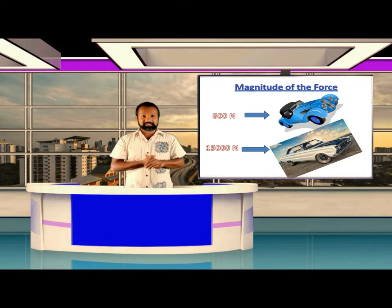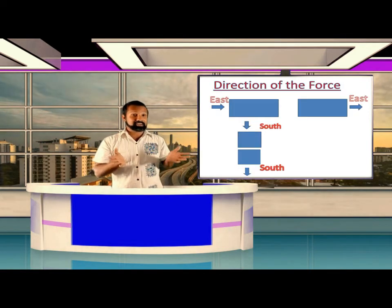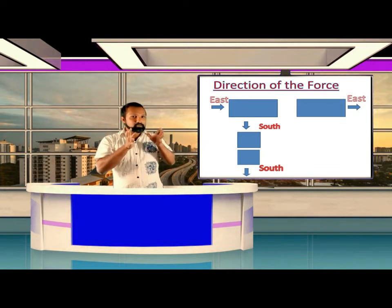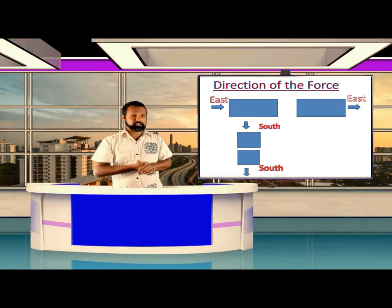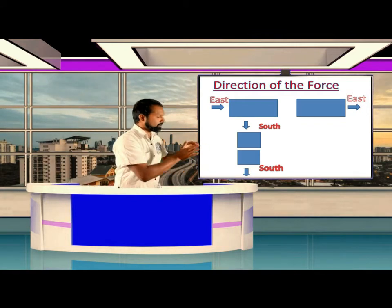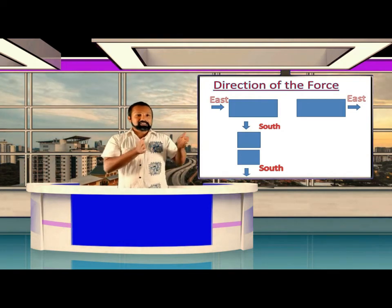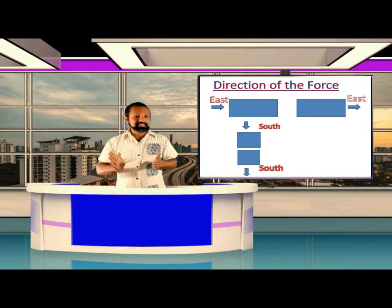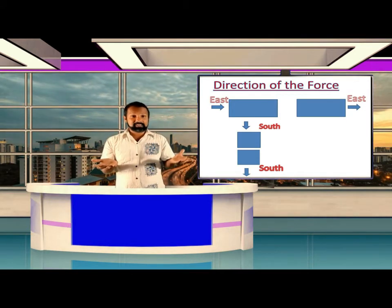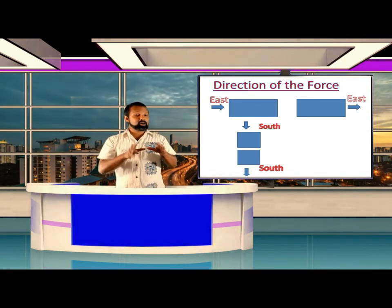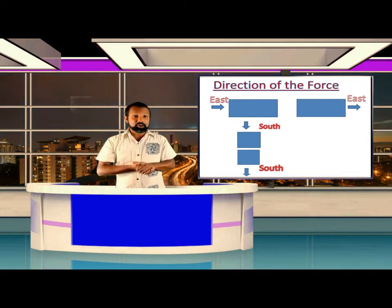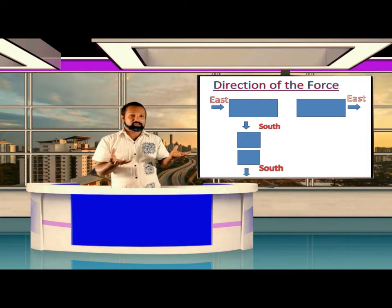The second factor is direction. When applying a force, it must be applied in a definite direction. If we want to move an object to the north, we apply force in the north direction; to move it east, we apply force in the eastern direction. Since force has both magnitude and definite direction, it is considered a vector quantity. Other examples of vector quantities include velocity and weight.